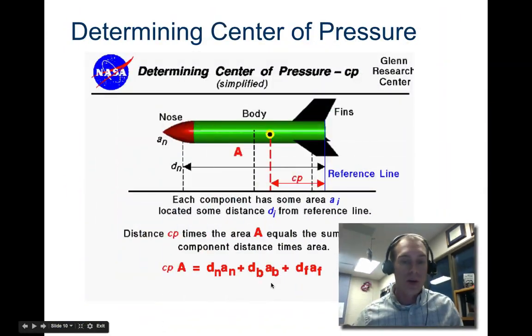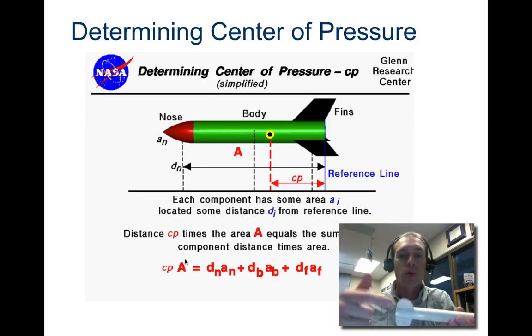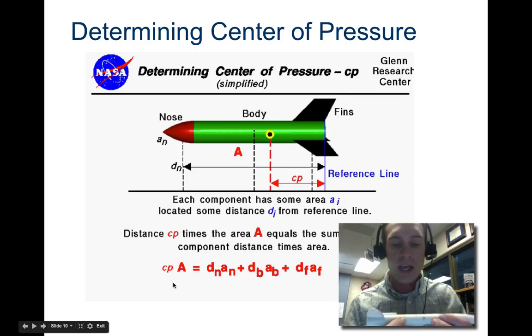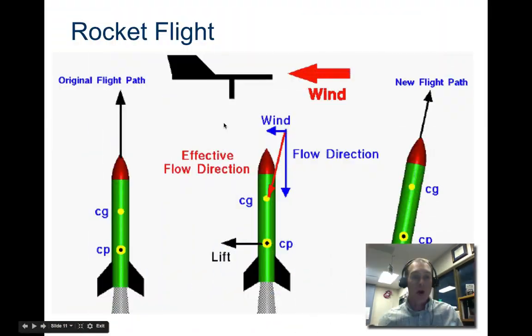Add all those values up and divide by the total area — remember the fin area counts both sides. That gives you the center of air pressure. In this example it was about three-quarters of an inch behind the center of gravity, which is quite stable. Remember to have your rocket engine installed when calculating center of gravity, because rocket engines weigh quite a bit and will significantly affect the result.